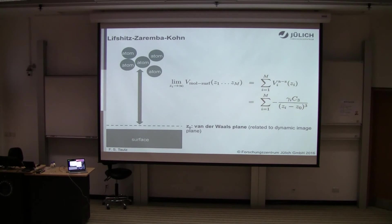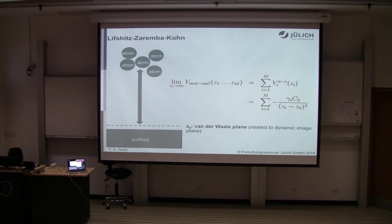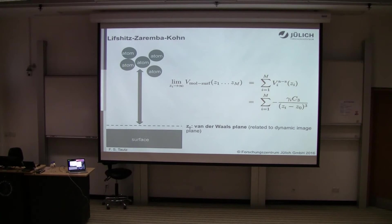We use the Lipschitz-Zaremba-Balkone result as the functional form for the van der Waals interaction: we sum over individual atoms, and there are at least three coefficients with a (Z − Z₀)^(−3) dependence. Z₀ is the dynamic image plane, C3 are the coefficients, and these are the positions of the individual atoms.